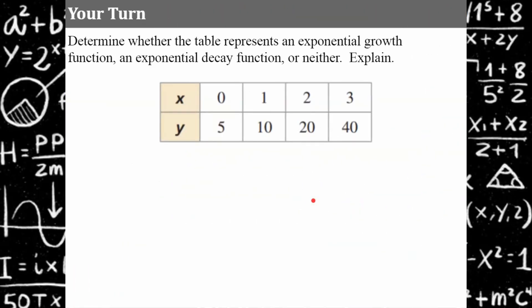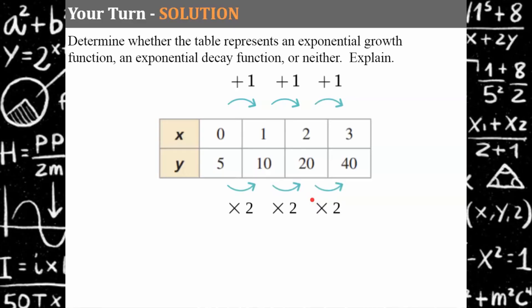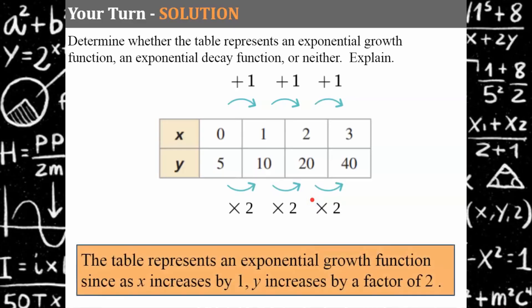Your turn — pause this video and determine what kind of function this is: growth, decay, or neither — and be able to explain. Come back and hit play when you're ready. Welcome back. X is increasing by 1 and the y values are increasing by a factor of 2. 5 times 2 is 10 and so on. This table represents an exponential growth function, since as x increases by 1, y increases by a factor of 2.